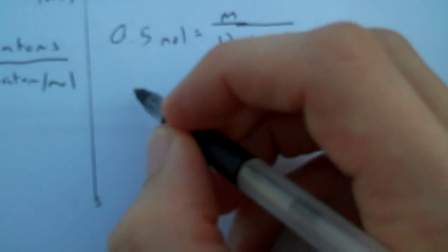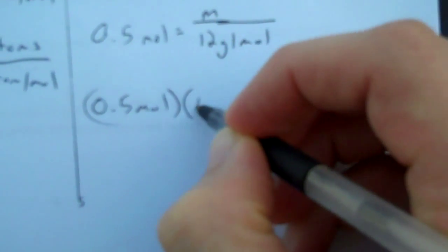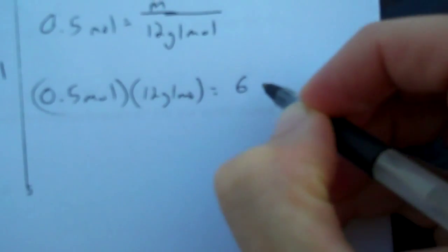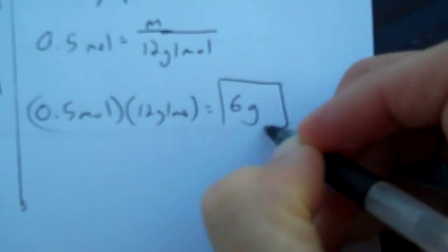I'll rearrange this equation. 0.5 mole times 12 grams per mole equals 6 grams. I'll circle my final answer.